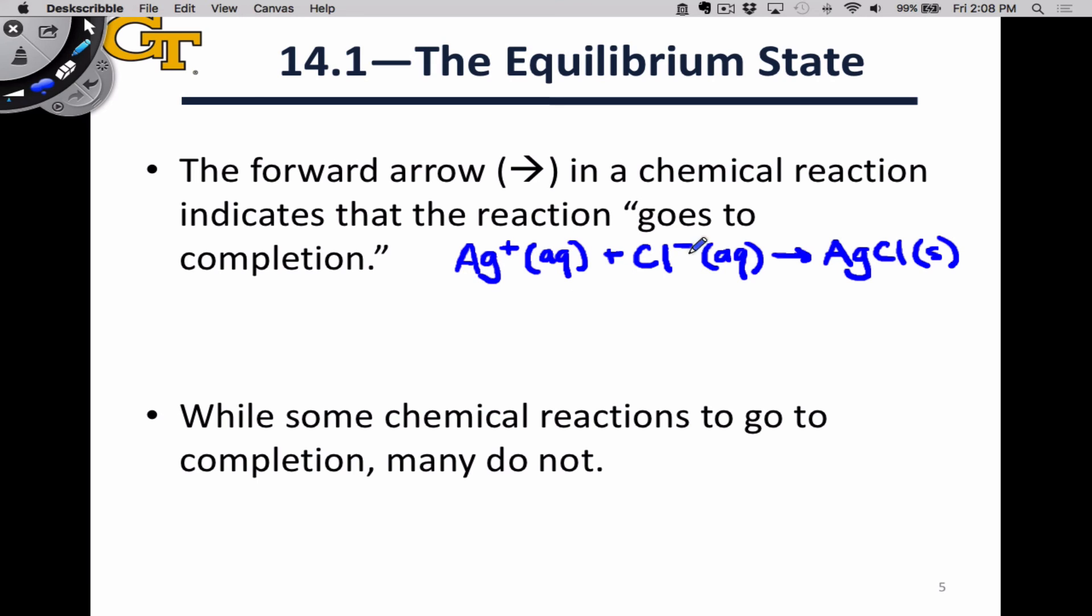An example of a reaction that goes to completion is the combination of silver plus ion and chloride minus ion in aqueous solution to form silver chloride precipitate. This reaction doesn't go backwards. If we start with one mole of silver plus and one mole of chloride ions and mix those solutions together, then at the end of the reaction, assuming we started with no product, we're going to end up with one mole of product and zero moles of both reactants. The reaction has gone to completion and we can use the tools of stoichiometry to predict how much product has formed.